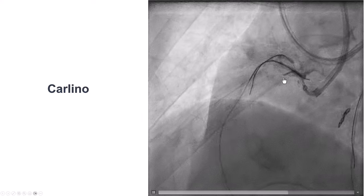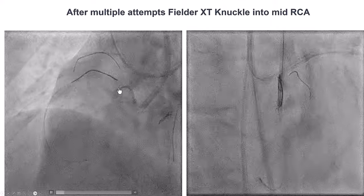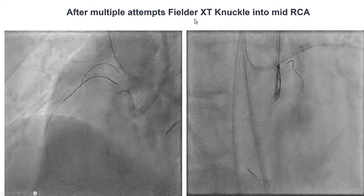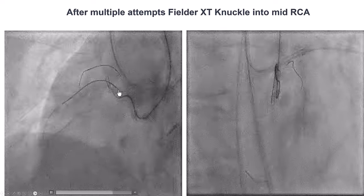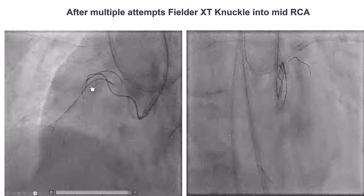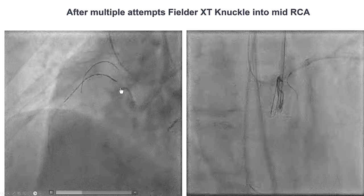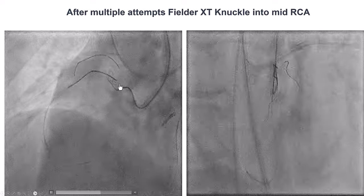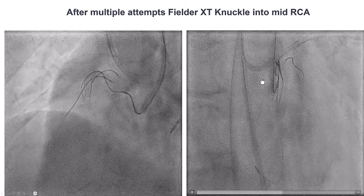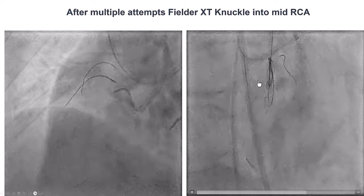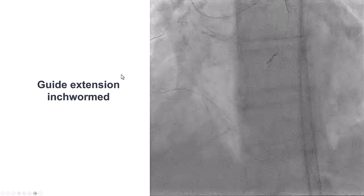We still had a lot of difficulty advancing equipment and used a guide extension — that didn't work. We advanced a microcatheter and did an injection of contrast through it using the Carlino technique. We then tried the Gladius Mongo — that didn't work — but then used a Filderwire XT, which was getting stuck inside the proximal RCA. Eventually a knuckle formed, and the knuckle appeared to be moving along the course of the RCA. This revealed why we had all the difficulty: a very tortuous proximal right coronary artery with a lot of bends. The Filderwire XT finally released and traveled along the course of the RCA. A contralateral orthogonal injection confirmed good movement of the wire alongside the retrograde guide wire.